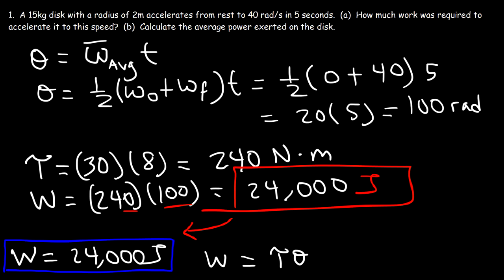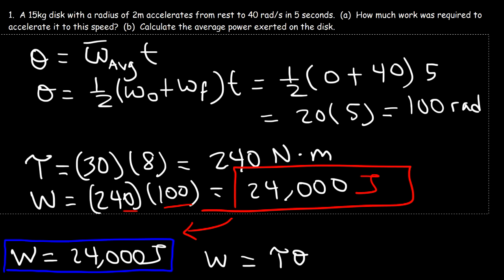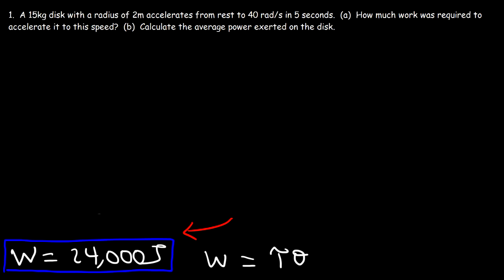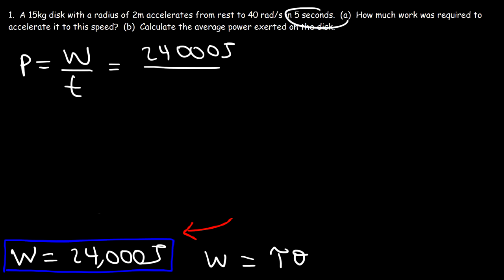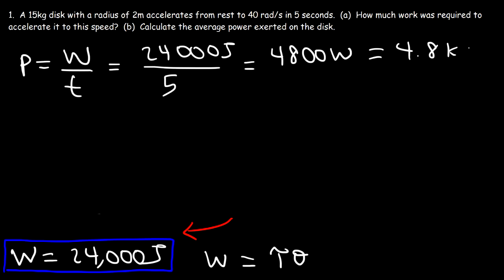Now let's move on to part B: how to calculate the average power exerted on the disk. One way is to take the work divided by the time. The work done is 24,000 joules and it was done in 5 seconds. So 24,000 joules divided by 5 seconds gives 4,800 watts, or equivalently 4.8 kilowatts.